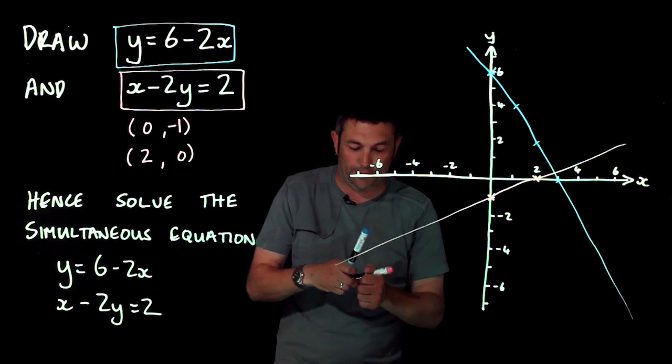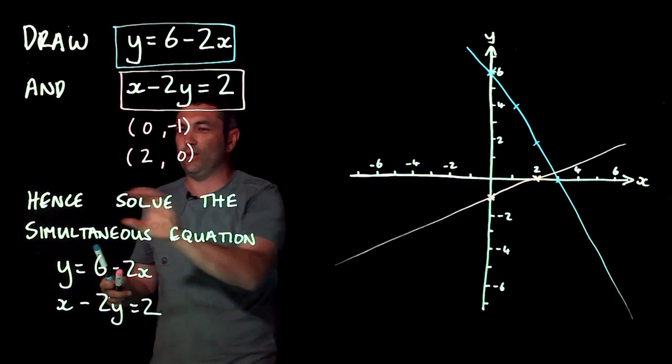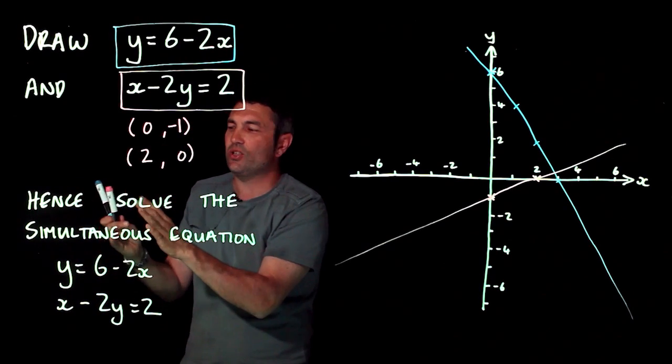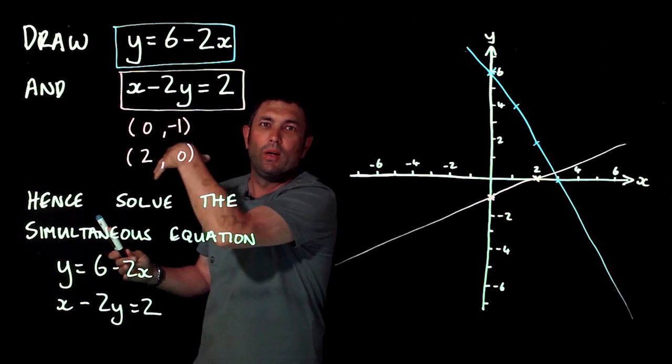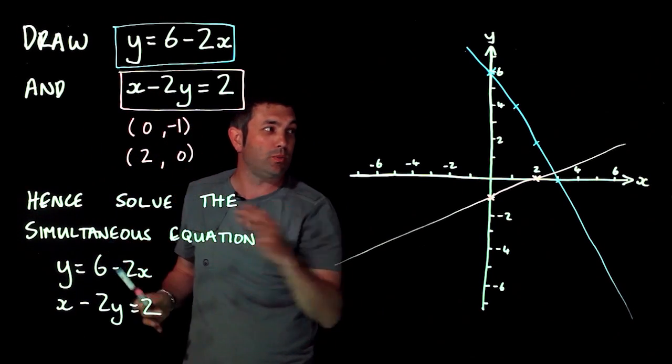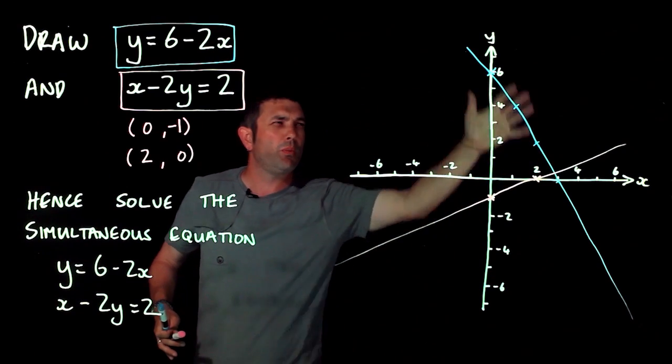Now if I look at this bit here it says 'hence'. As soon as you see the word 'hence' you probably assume you're going to be using something that you've worked out before in the question. The only thing we've done in the question before is draw the two graphs, so we're probably going to be using what we've done over here.